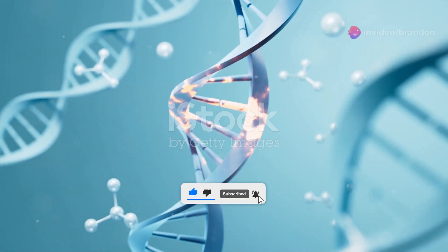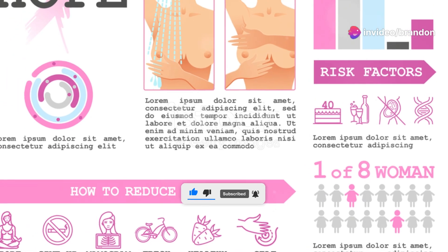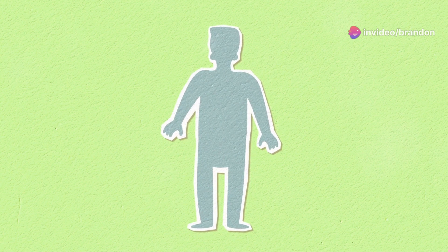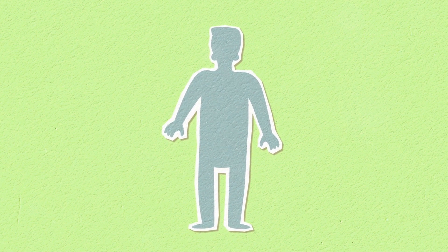But what happens when these genes mutate? Well, mutations in BRCA1 and BRCA2 can lead to a significantly higher risk of developing certain cancers, most notably breast and ovarian cancers.